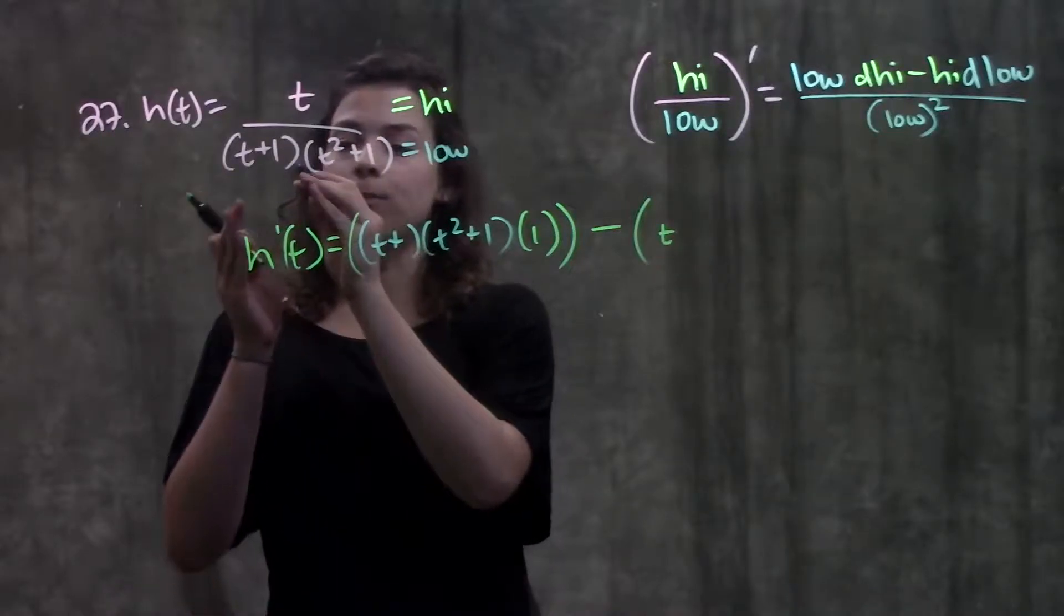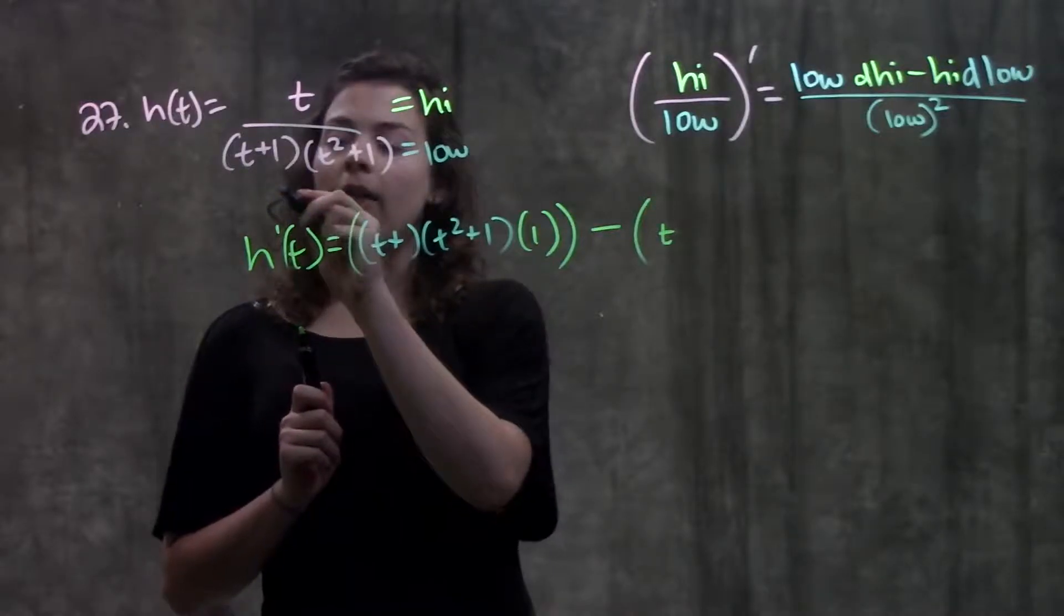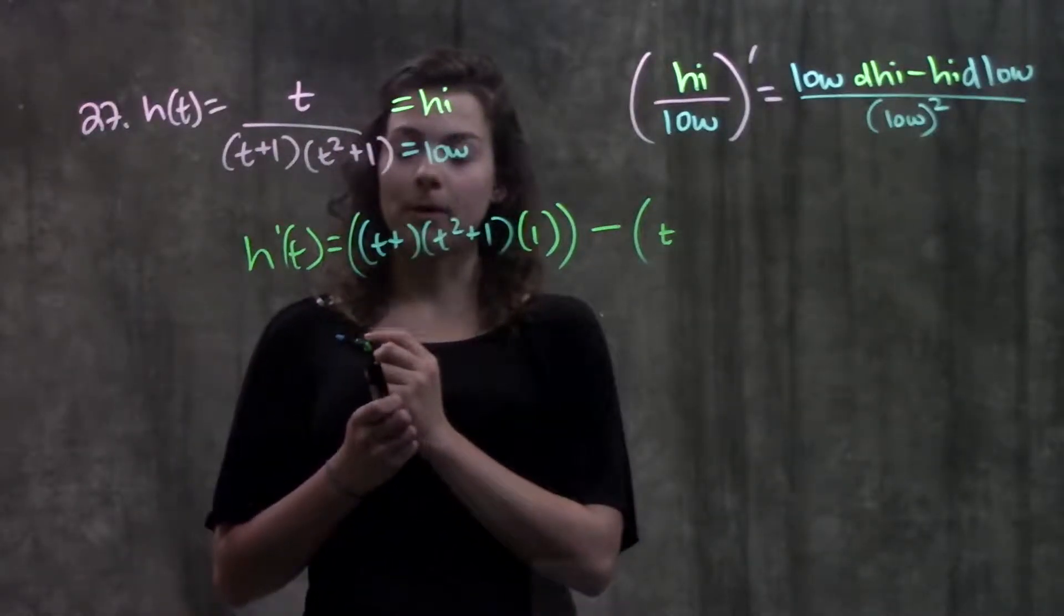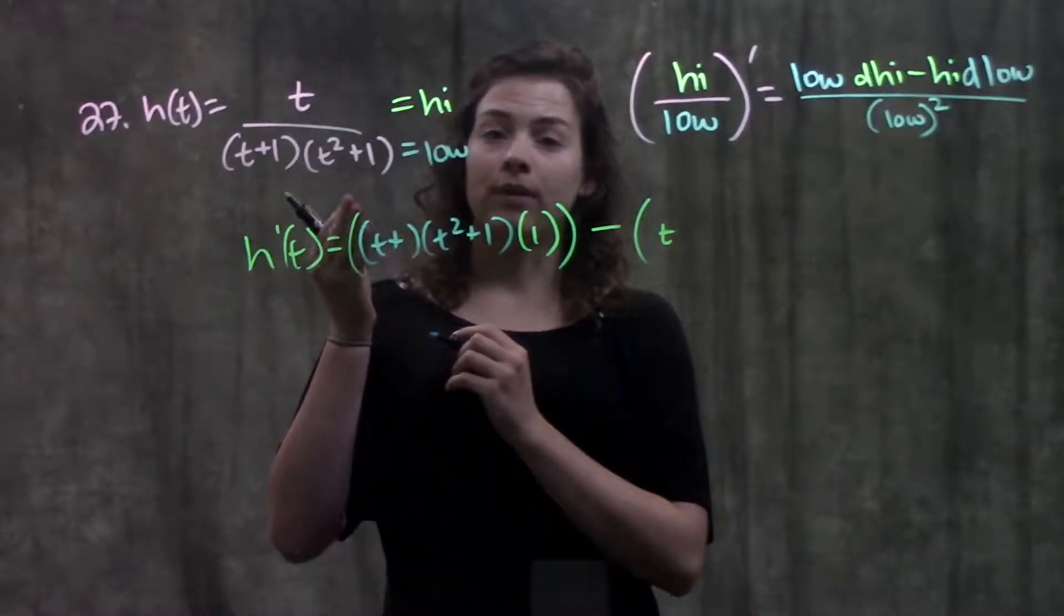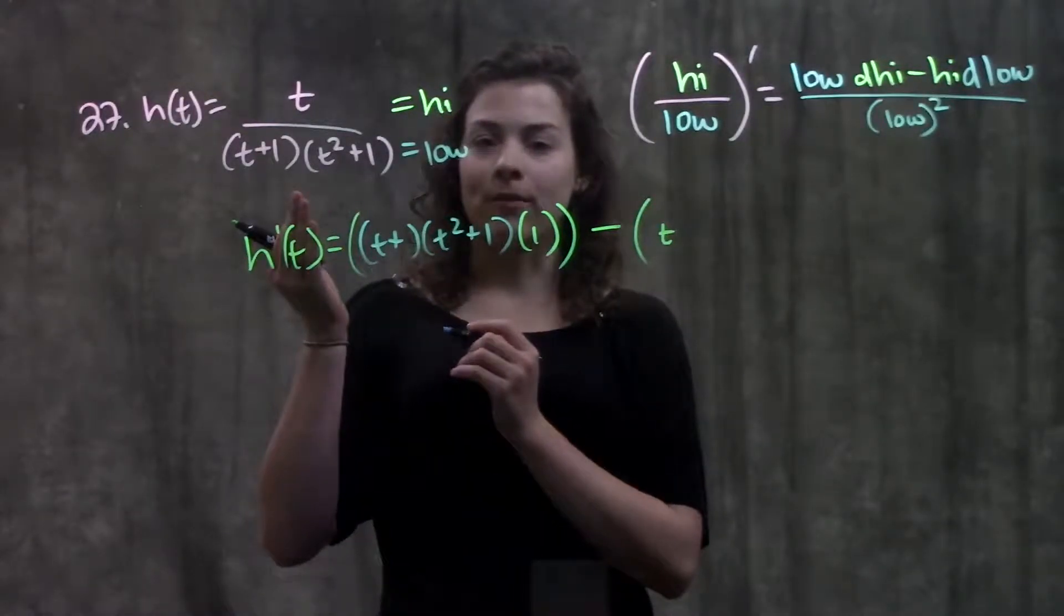So in my d low, my derivative of the denominator, I'll have to use my product rule that I also learned in this section. And remember, product rule tells us to take the first times derivative of the second plus second times derivative of the first. So applying that rule...